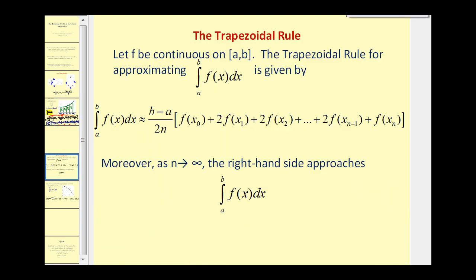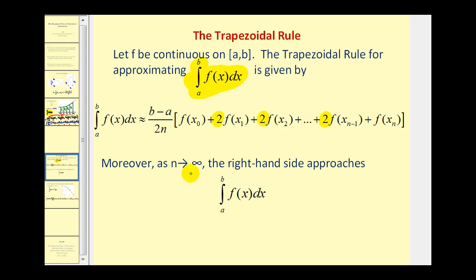Let's go ahead and formalize the trapezoid rule. Using the trapezoid rule, we can approximate this definite integral using this formula. This formula represents the area of a certain number of trapezoids based upon the value of n. Notice that we have one f of x, then twos, and we end with a one as well. As n approaches infinity, the right-hand side is going to approach the value of that definite integral.